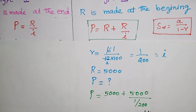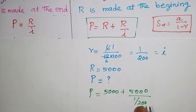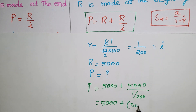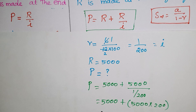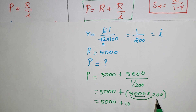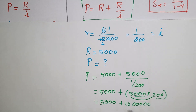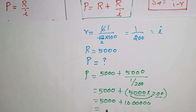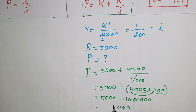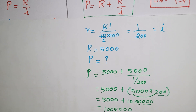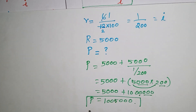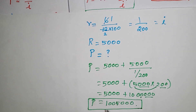The rate per month i equals 6 divided by 100 divided by 12, which equals 1 by 200. So P equals 5,000 plus 5,000 divided by (1/200). Since 1 divided by (1/200) equals 200, we get P equals 5,000 plus 5,000 multiplied by 200, giving P equals 5,000 plus 1,000,000. The present value is 1,005,000 rupees.